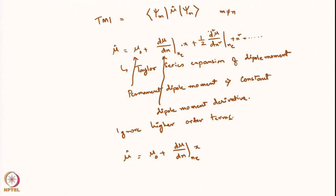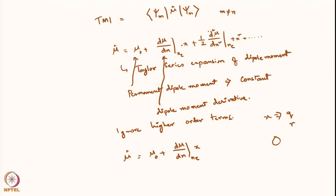One thing to note: x is just a generic coordinate — it could also be called q or r, where r is the radial vector connecting two atoms in a bond. In previous classes, if I have used r, it can be used interchangeably with x; they are just variables.